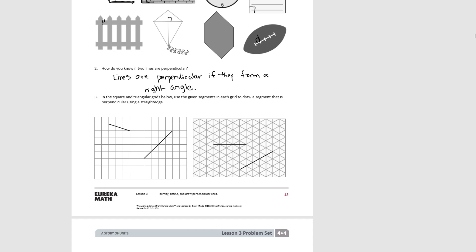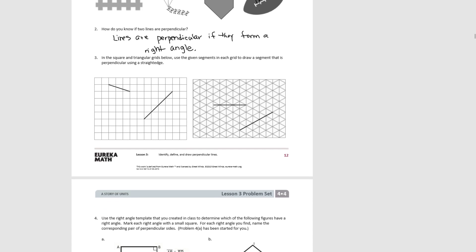Pause the video and try number three. Using your straight edge, we can draw a perpendicular line here. You can draw a perpendicular line here. You can also draw them on the other side. You can draw them in many different locations — also here. Any time you form a right angle, you have perpendicular lines.